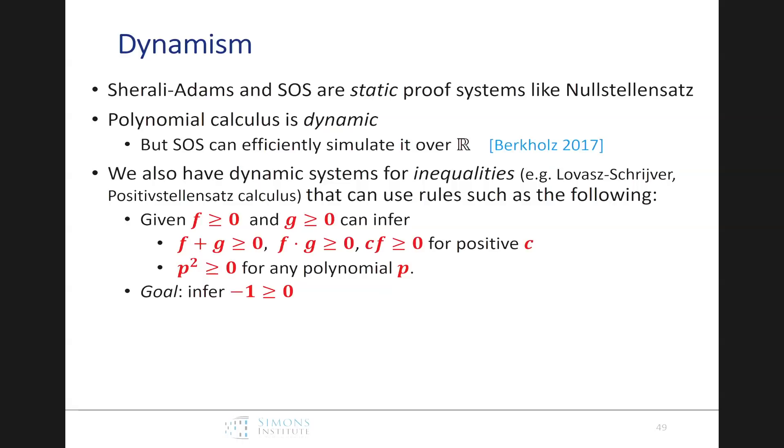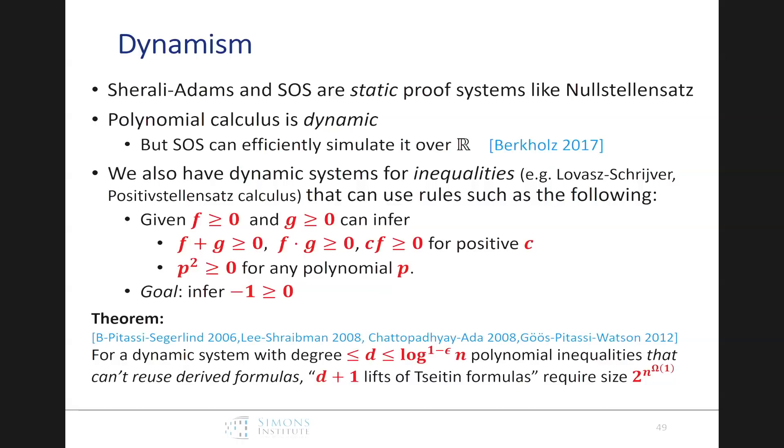So, it says, well, okay, static polynomial calculus is pretty strong, but, hey, why not make it dynamic? So, we can have dynamic systems for inequalities. Say, given, so, two non-negative quantities, we can infer that their sum is non-negative, or their product is non-negative. And we could add, for the square of any polynomial. And again, the goal would be to infer minus one is bigger and equal to zero. We actually know very little in terms of lower bounds for this system, this class of systems. In terms of proof size, we know somewhat more restricted things for special properties. And as far as I know, the best result we know is something like the following, which says that if we restrict this dynamic system to just like that DPLL to one that can't reuse derived formulas, then a certain class of formulas do require exponential size if the degree isn't very big. If it's, it's bounded below, below log n.